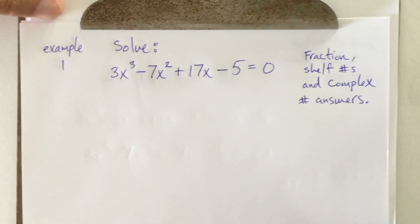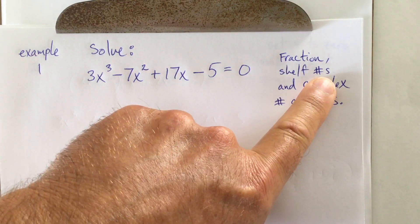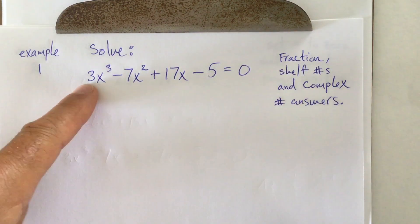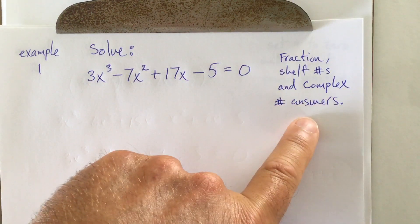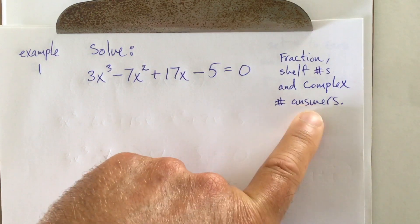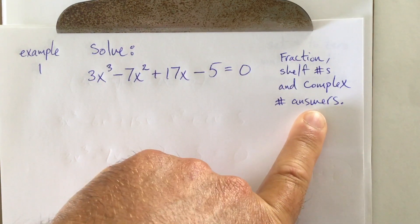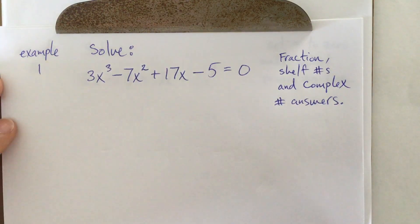What do I want you to get from example one? There can be fraction shelf numbers. We haven't seen that yet, but it's because of this guy. And you can have complex number answers. That means there could be i numbers in the answer. Now, i numbers are actually really easy to spot when you do the work.